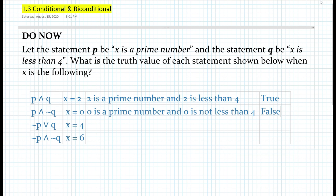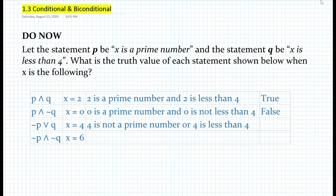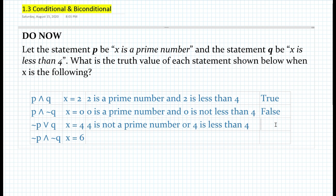The third statement is 'not P or Q.' Substituting x = 4, we get: four is not a prime number or four is less than four. The first part — four is not a prime number — is actually true. But four is less than four is definitely false. However, in a disjunction, you only need at least one disjunct to be true for the disjunction to be true. Therefore, that statement is true.